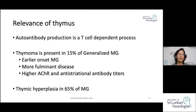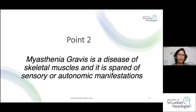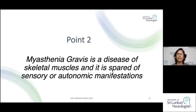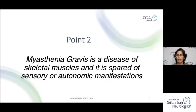Myasthenia gravis is a disease of skeletal muscles because acetylcholine receptors — against which the antibodies are directed — are found only in skeletal muscles. It does not affect smooth or cardiac muscles. Wherever there are skeletal muscles, they may be affected. There are no sensory or autonomic manifestations from the disease itself, though some autonomic features may appear as a side effect of treatment.